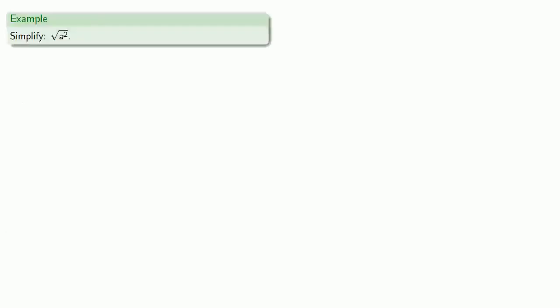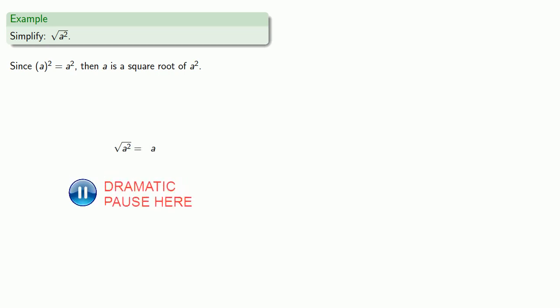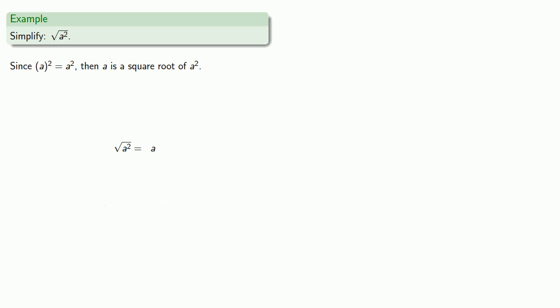For example, let's say we want to simplify the square root of a². Since a² is a², then a is a square root of a², and we might write √(a²) = a. But we would be wrong.